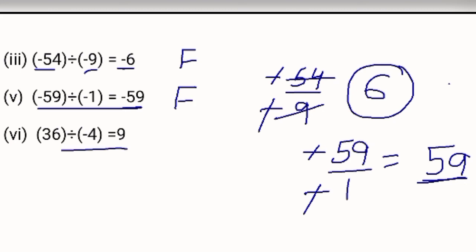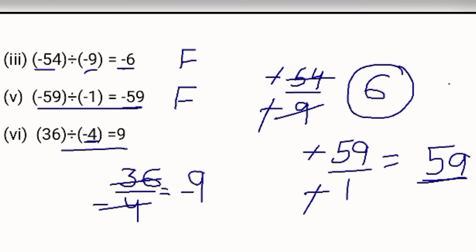Last one: 36 divided by minus 4. 9 fours are 36, so this is 9. But in the denominator, one number has a negative sign, so the answer will be negative — plus minus gives minus. So the answer should be minus 9. But they have given plus 9, which is false.